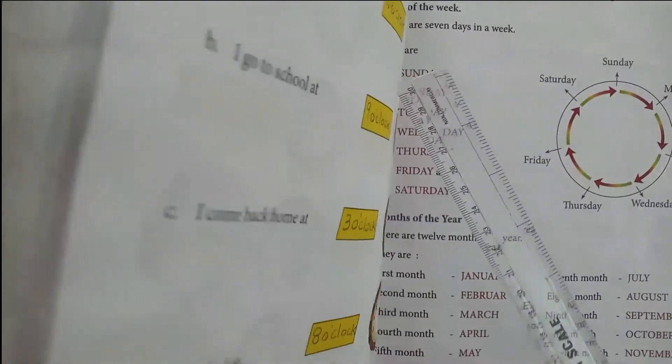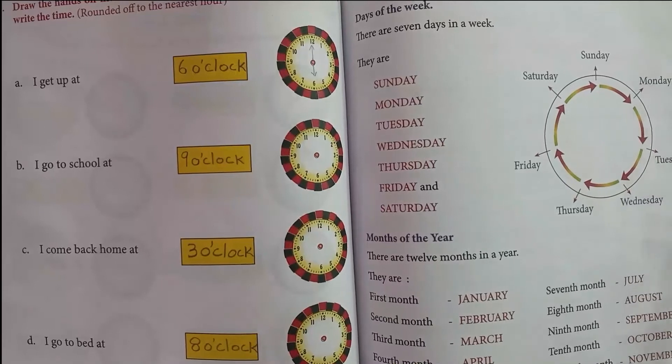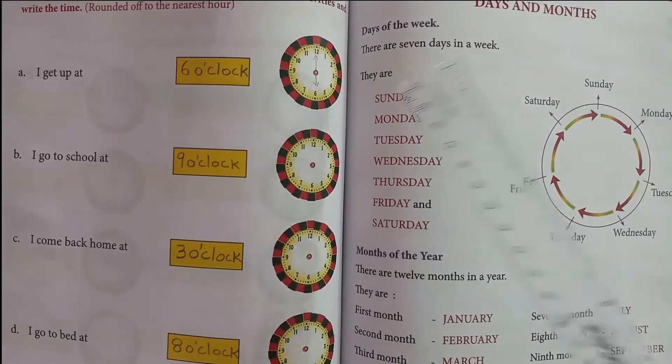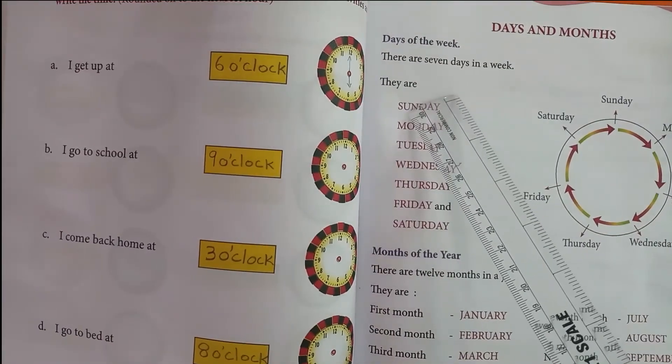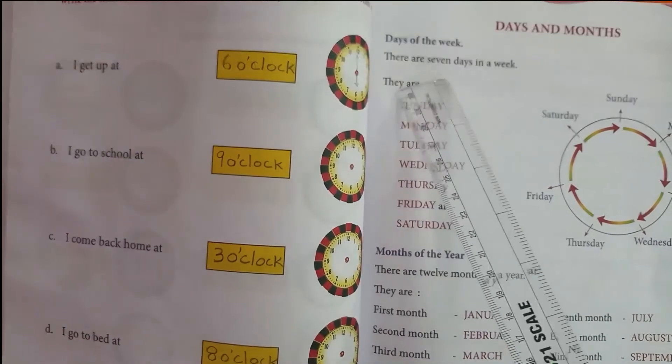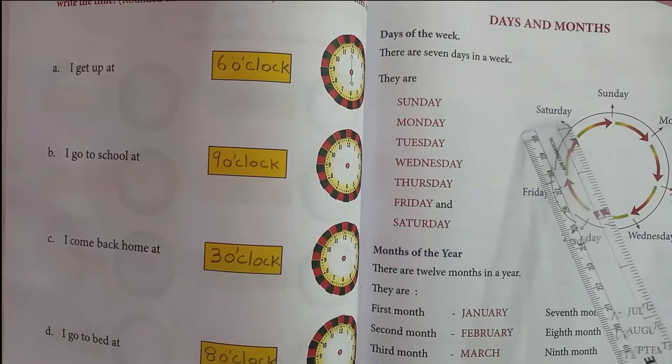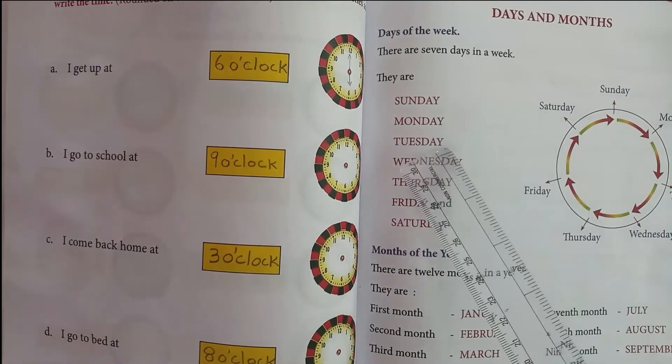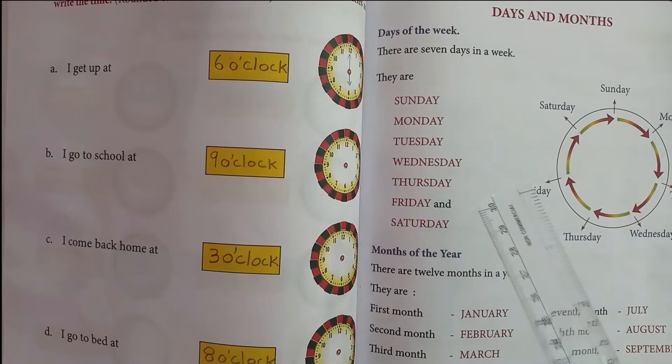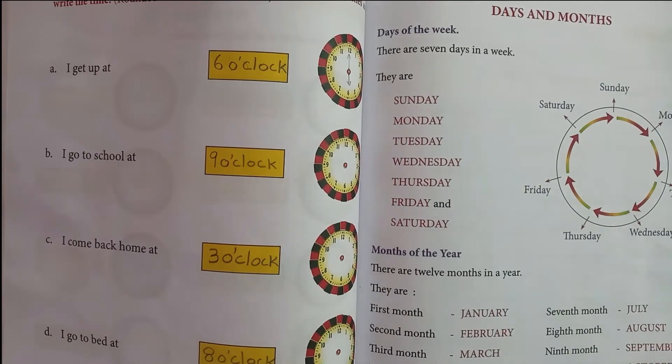Now days and months. Days of the week: How many days are there in a week? There are 7 days in a week. They are Sunday, Monday, Tuesday, Wednesday, Thursday, Friday, and Saturday.